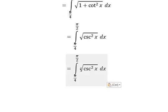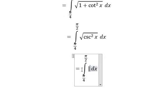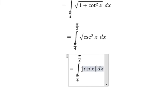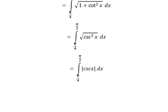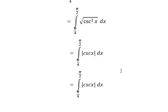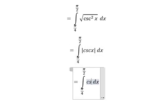We transform this into the absolute value of csc(x). We know that from π/4 to π/2, if we put the value in here, it's still positive, so we use csc(x).